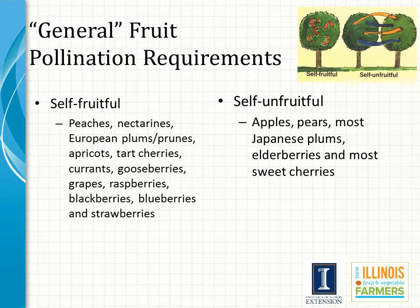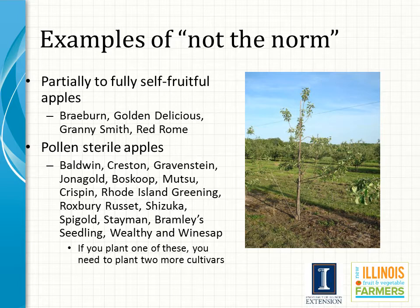Pollination is an important factor when selecting and planting tree fruit and small fruit. A list of generalized pollination requirements for the various fruits is presented. However, exceptions commonly occur among cultivars of a particular fruit. Take apple, for example — many apples are self-unfruitful, but there are cultivars that are partially self-fruitful, fully self-fruitful, and also cultivars that are pollen sterile. Most nursery catalogs provide information about fruitfulness and which cultivars are recommended for pollinating each other.